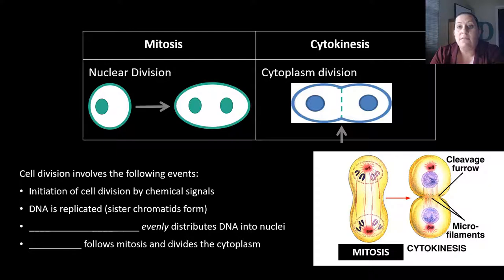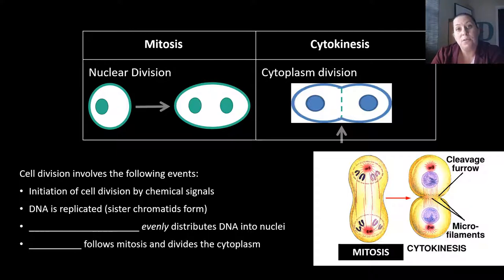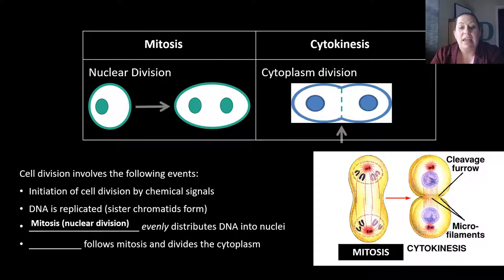Cell division involves the following events: first, the initiation of cell division happens due to chemical signals that tell the cell it's time to divide. Before that can happen, DNA needs to be replicated so we copy the DNA — that way each new cell has the exact amount of DNA it needs and is identical to the parent. Mitosis is the nuclear division that will evenly distribute the DNA into each nucleus, and cytokinesis follows to divide the cell and cytoplasm.